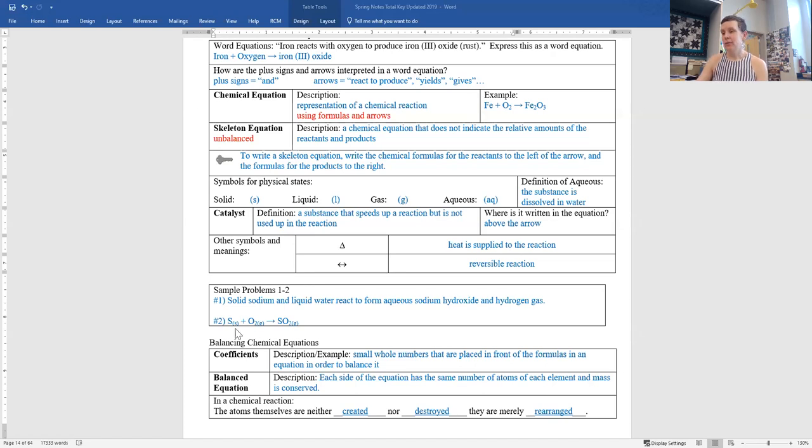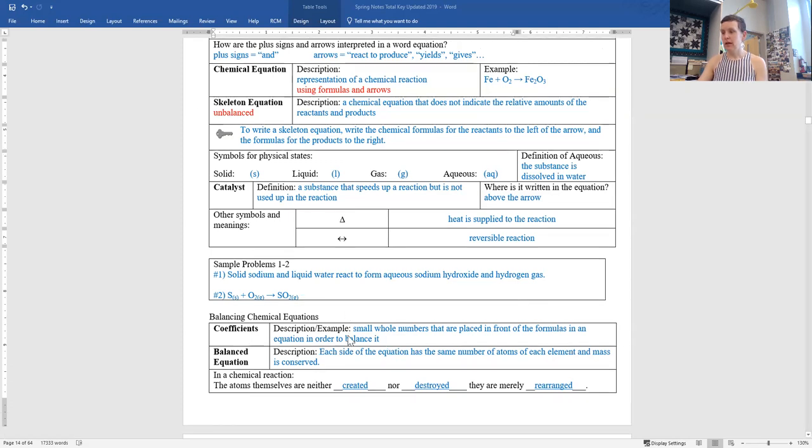Sample problem two, we're writing the chemical equation. We get solid sulfur, so put a little S there, oxygen gas, make sure you have that G gives you sulfur dioxide, which is SO2 gas.